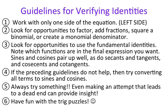Step three is to look for opportunities to use the fundamental identities. Take note of which functions are in the final expression you want. If your final expression has a sine in it, try to find identities that have sines in them. Sines and cosines pair up well because of the Pythagorean identities. Secants and tangents pair together well, and cosecants and cotangents pair together well. Step four says if the preceding guidelines do not help, try converting all terms to sines and cosines, since those are your basic trig functions.